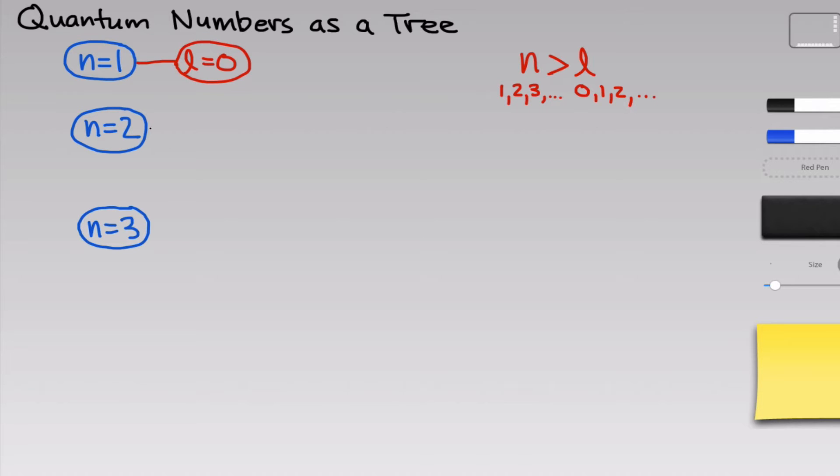And we can of course still have l equals 0 at the n equals 2 level, but now we're also able to have l equal to 1 because 1 is less than 2, right? And so l equals 1 fits the rule when n equals 2. For n equals 3, we can have l equals 0, l equals 1, or l equals 2. So three branches, or three sub-shells, if you like, for the n equals 3 level.